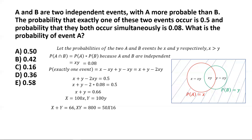Since capital X is the larger quantity and we know capital X is greater than capital Y, capital X must be 50 — the larger of the two numbers. Therefore, small x, which is the probability of event A, is capital X divided by 100, which is 50 divided by 100, giving 0.5. So the correct answer is option A: 0.5.